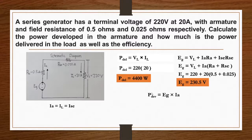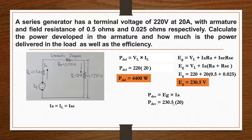Solving for power developed: power developed equals generated voltage times armature current. So 230.5 volts times 20, our armature current. We got our power developed, which is 4,610 watts.